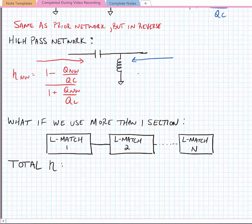And in the right to left direction, the efficiency is 1 minus Q_network over Q_L divided by 1 plus Q_network over Q_L.